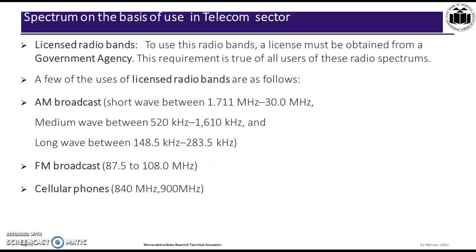Licensed radio bands require a license obtained from the government agency — this requirement applies to all users of the radio spectrum. AM broadcast covers three ranges: short wave 1.711 MHz to 30 MHz, medium wave 520 kHz to 1610 kHz, and long wave 148.5 kHz to 283.5 kHz. FM broadcast has a frequency range of 87.5 to 108 MHz. Cellular phones operate at 840 MHz and 900 MHz.